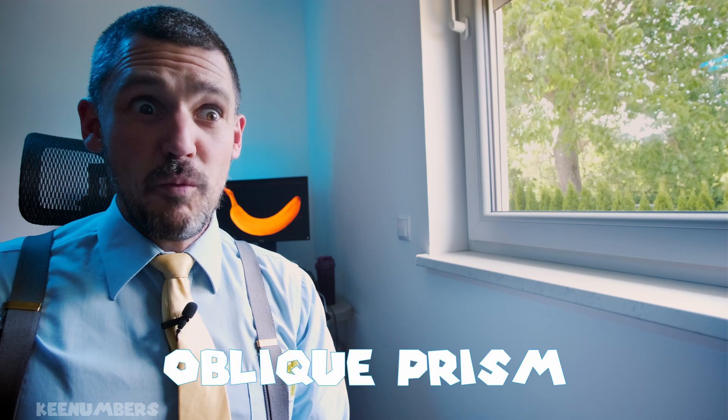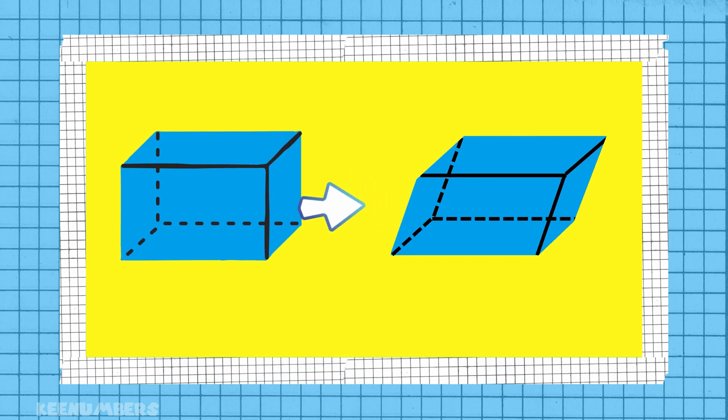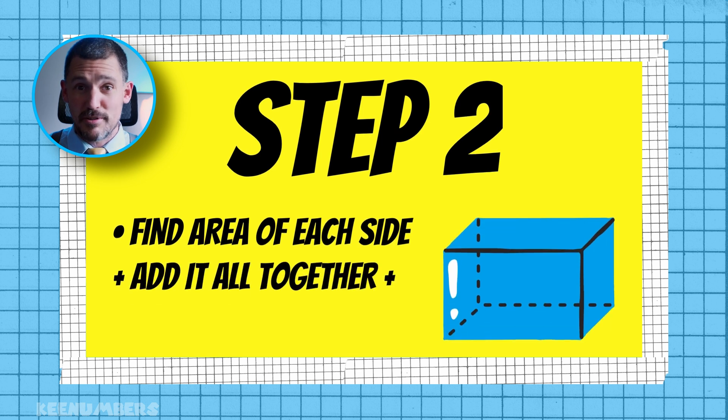What about an oblique prism? An oblique prism is one that you push to the side. To calculate the surface area of any of these prisms, you have to take each individual side and calculate its area, then add it all together by way of addition. In other words, add up all the different surface areas.